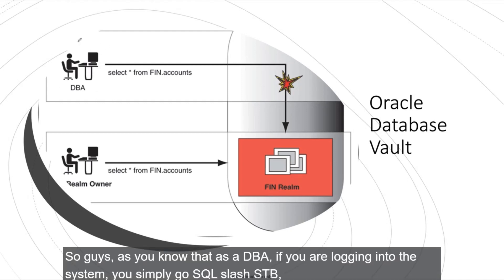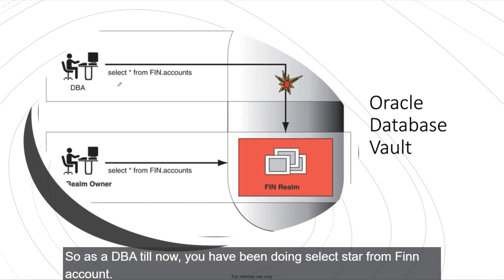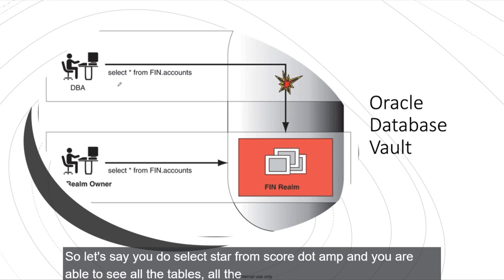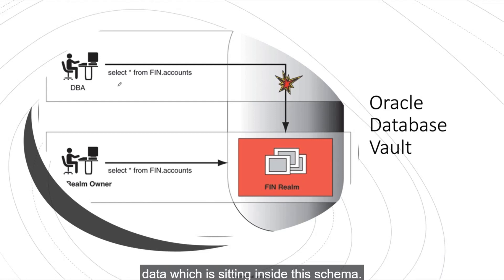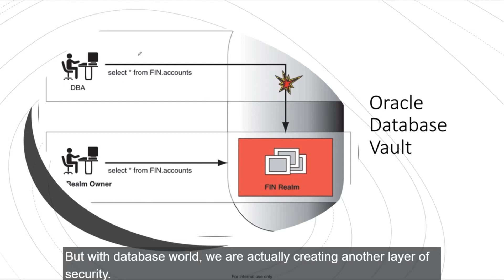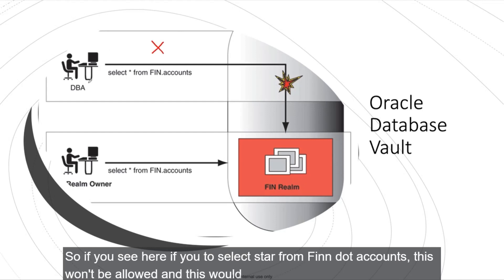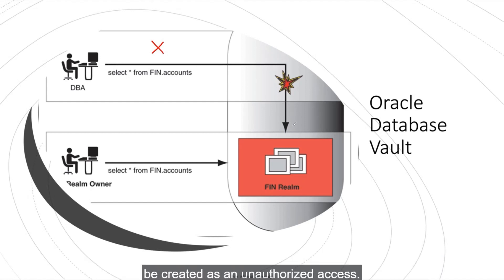As a DBA logging into the system, you simply do SQL plus slash as sysdba. Let's say you have a database with a schema called FIN. Previously, you could do SELECT star from SCOT.EMP and see all the data in that schema. But with Database Vault, we are creating another layer of security, so even a privileged user like a DBA is not able to access the data. If you try SELECT star from FIN.accounts, it won't be allowed and will be flagged as unauthorized access.